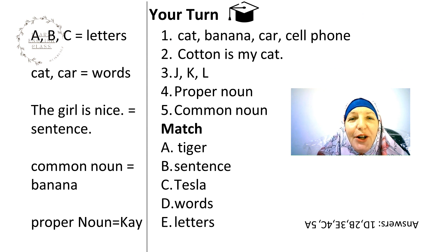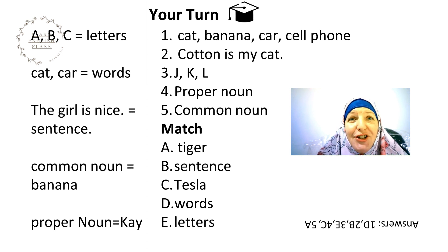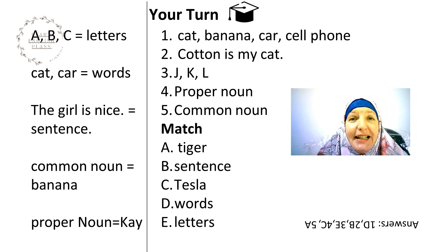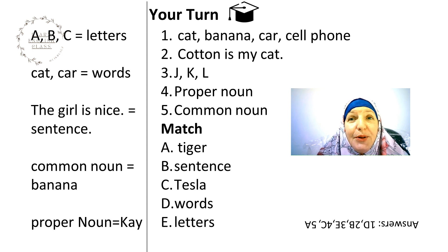In an upcoming video, I will go over the letters of the alphabet one by one so you can practice pronunciation. The letters of the alphabet make the words — the names of people, places, and things. Words linked together make sentences. Common nouns are the names of people, places, and things, and proper nouns are the brand names or the proper names of people, places, and things.